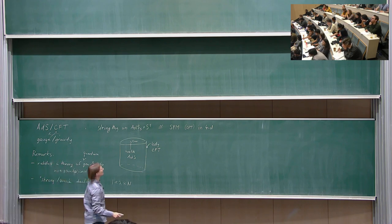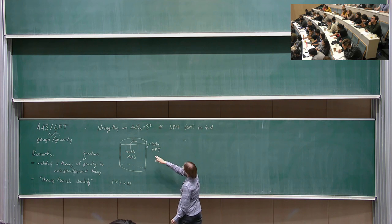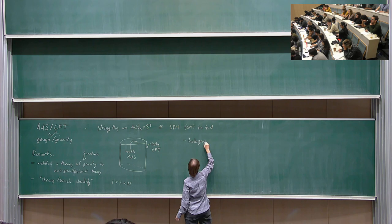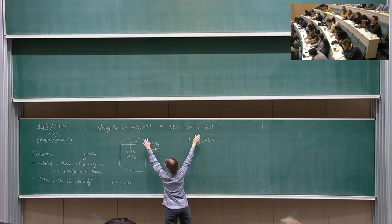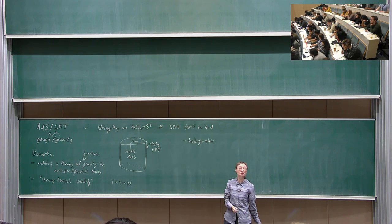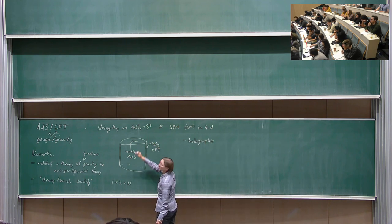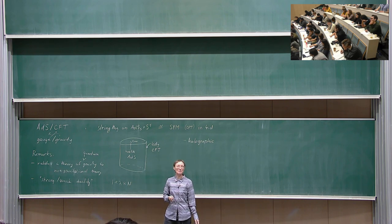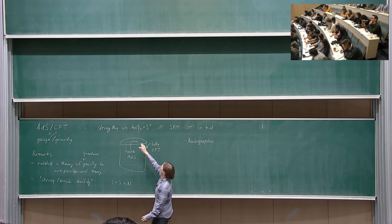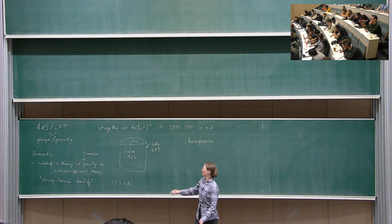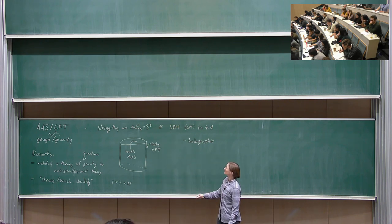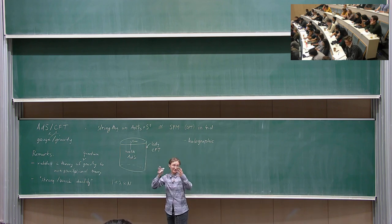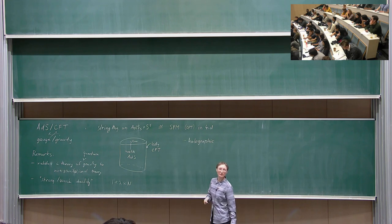The most mysterious aspect of the duality is that it's holographic: the two theories live in different dimensions. This is a four-dimensional theory and a ten-dimensional string theory, which you can reduce to AdS5 cross CFT4. There are many other examples — it's always the CFT being one dimension less than the AdS, because it lives in some sense on the boundary of AdS.